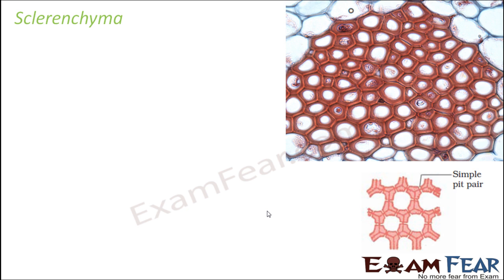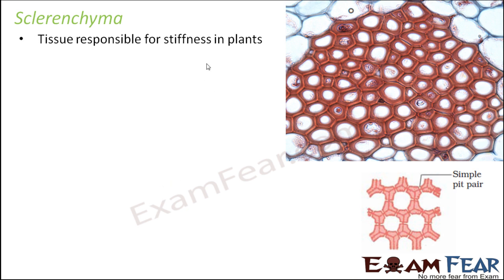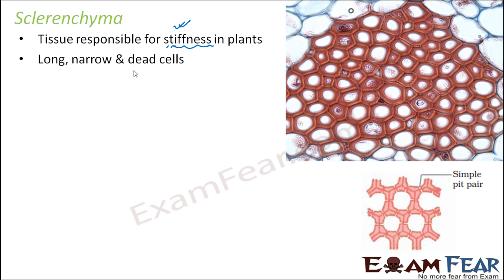Now we will talk about sclerenchyma. This tissue is responsible for stiffness in plants — it is going to be the most stiff tissue out of parenchyma, colenchyma, and sclerenchyma. These are long, narrow, and dead cells. Whereas parenchyma and colenchyma were living cells, sclerenchyma are dead cells. Living cells are those inside which all cellular processes are happening, such as cellular respiration. But if it is dead, all those cellular processes have stopped. Since they are dead cells, they cannot store food, water, or nutrients — they will just provide stiffness and support to the plant.